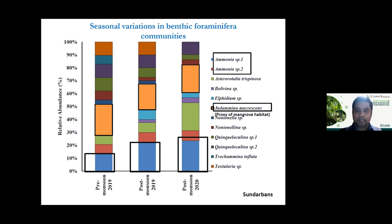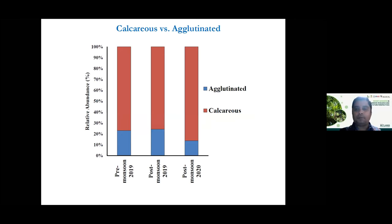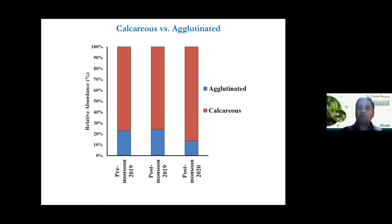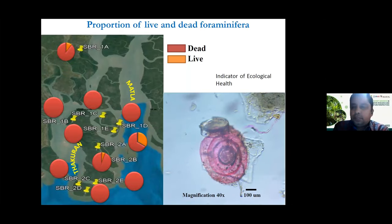Looking at the calcareous versus agglutinated forms, the Sundarbans system is dominated by calcareous forms because they have very robust tests and can withstand the wave action in Sundarbans. Agglutinated forms are found more upstream toward the north where fresh water flow is more important. There is a nutrient stoichiometry at play that is determining the distribution of agglutinated versus calcareous foraminifera. To understand the ecosystem from the viewpoint of foraminifera, an important metric is the live-to-dead ratio. More than 70 percent of tests taking up rose bengal stain indicates good ecological health, and when you plot live versus dead tests along a salinity gradient, the live tests correspond to areas with diverse mangrove vegetation.